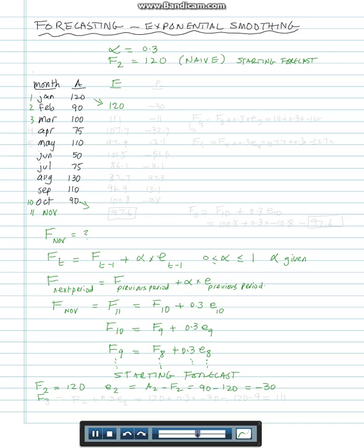Now I'm ready to calculate forecast 3. Forecast 3 according to the formula is forecast 2 plus 0.3 multiplied by error 2. So that's going to be 120 plus 0.3 multiplied by minus 30, which is 120 minus 9, which is 111. Now we calculate 100 minus 111, that's minus 11, and we keep going.